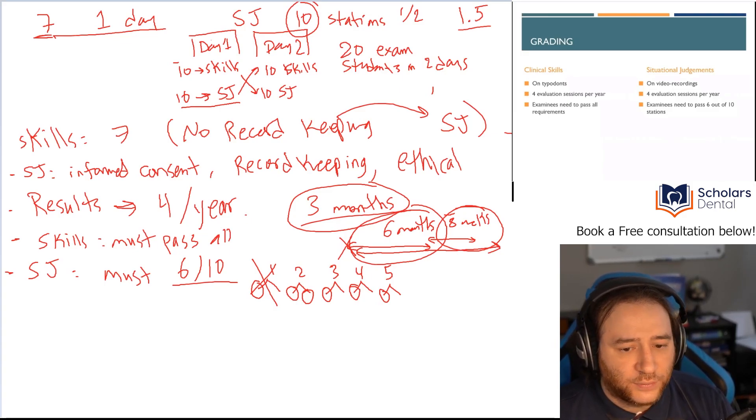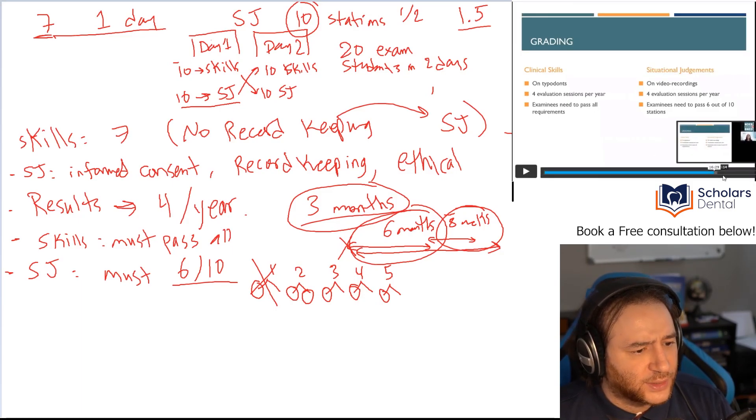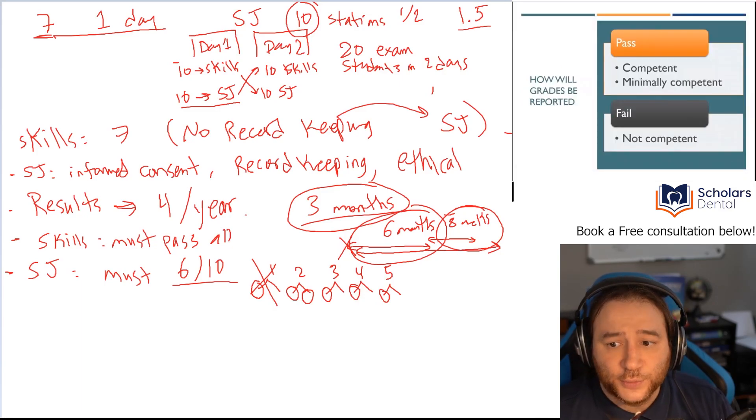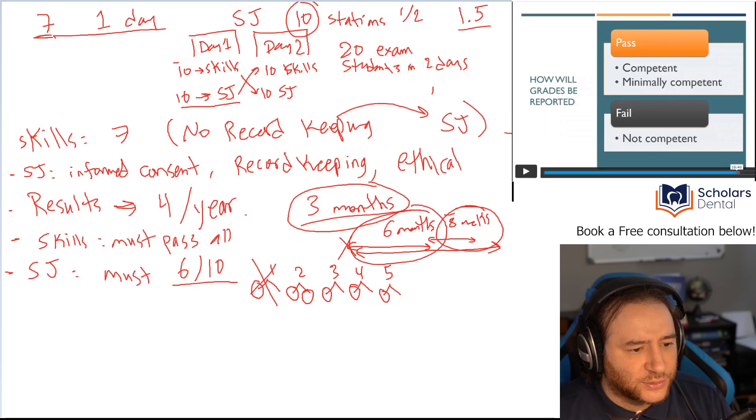Now, how grades are reported. Let's go to the 1840 I have here. It's either it's going to say you passed or failed, and if you're competent, minimally competent, then that's it. That's pretty straightforward. And then they show us the test center.